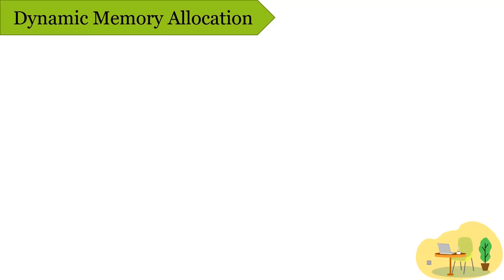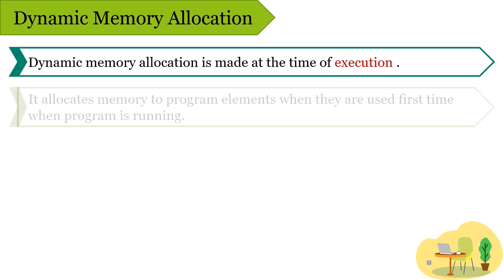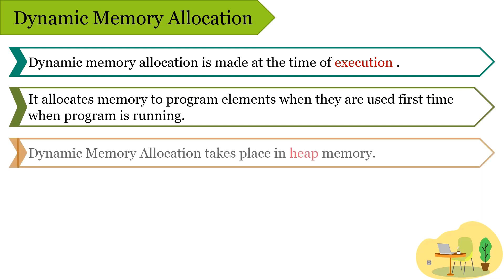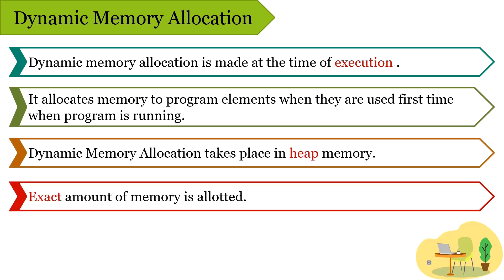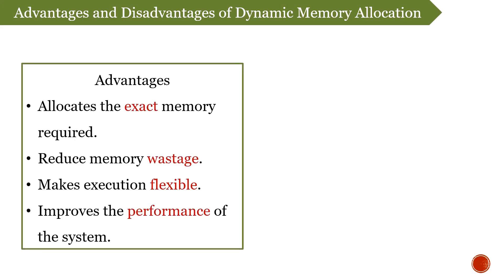In dynamic memory allocation, the process of memory allocation is conducted during execution of the program. Memory is allocated to program elements when they are used for the first time while the program is running. This kind of allocation takes place in heap memory, and an exact amount of memory is allocated to program elements. This makes the execution flexible and also improves the performance of your system. The advantages of dynamic memory allocation are that it allocates the exact amount of memory required, which reduces memory wastage, and it makes execution flexible, thereby improving system performance.